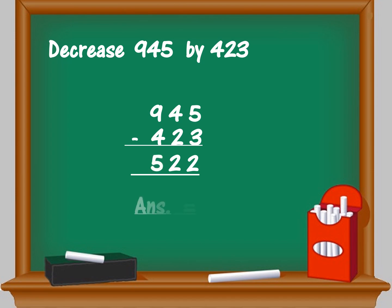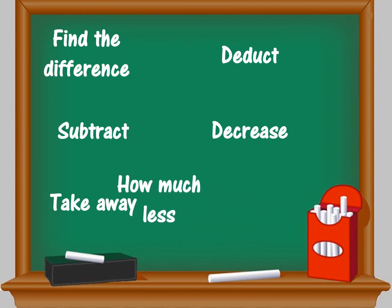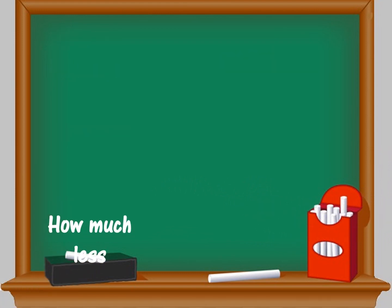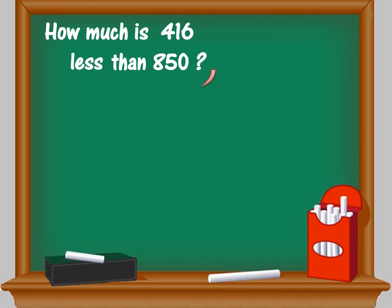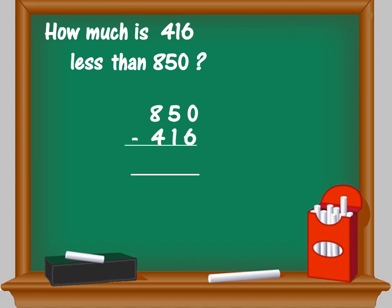The answer is 522. The last phrase we will discuss today is 'how much less.' How much is 416 less than 850? 'How much less' means decrease, so you decrease 850 by 416, which means 850 is the minuend. Write the minuend 850, minus the subtrahend 416. You can't subtract from 0, so borrow from the 5 in the tens place — that becomes 4 — and in the units place you have 10 minus 6 which equals 4. Tens place is 4 minus 1 is 3, and hundreds place is 8 minus 4 is 4.